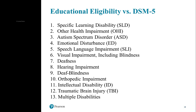Other health impairment, or OHI, is defined as a condition that limits a child's strength, energy, or alertness. The most common impairment under OHI is ADHD, which almost always falls under OHI. Remember, the disability has to have an adverse effect on the child's educational performance — so if a child has ADHD but there's not necessarily an adverse impact on educational performance, that student might still not qualify for special education services.